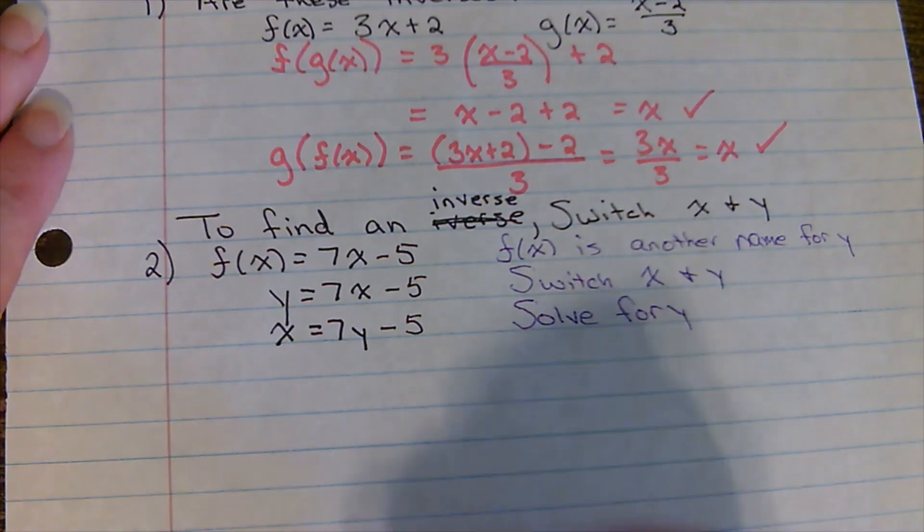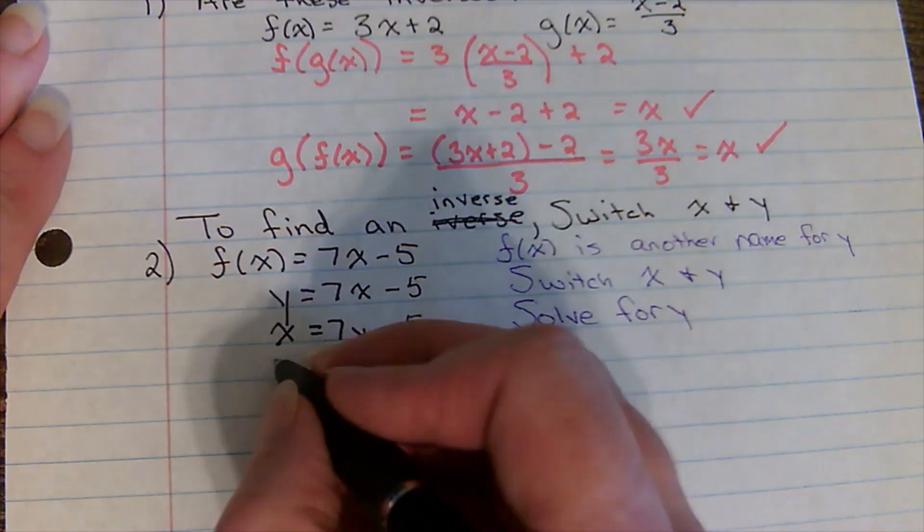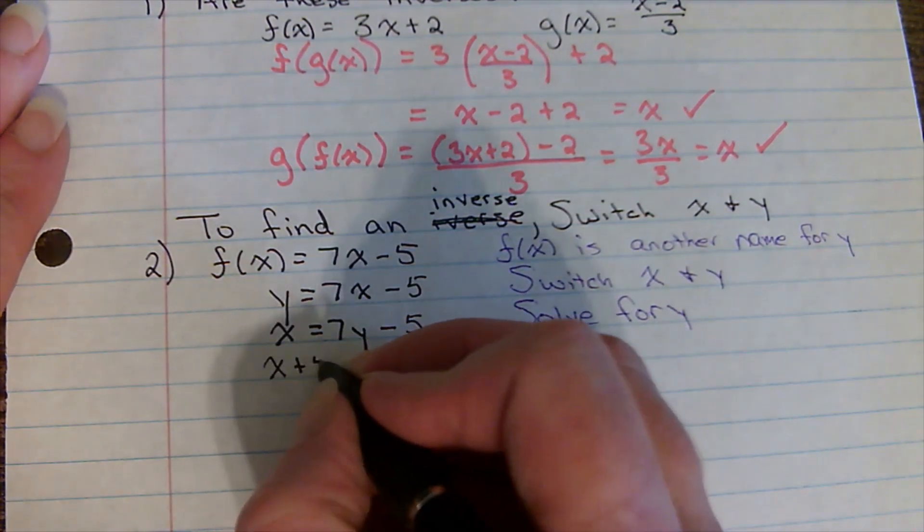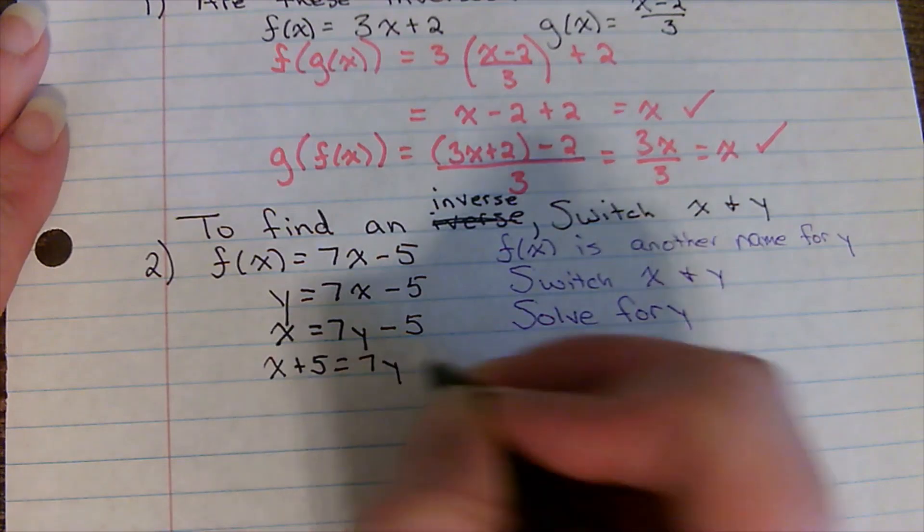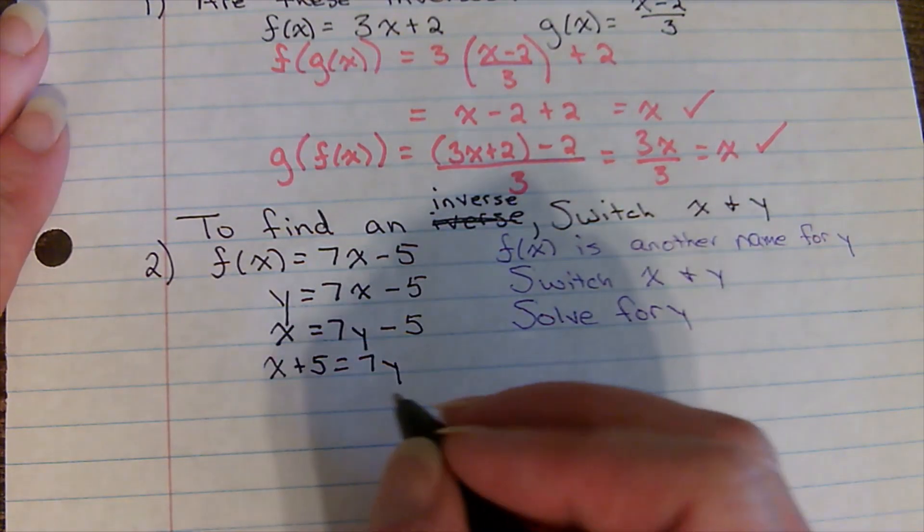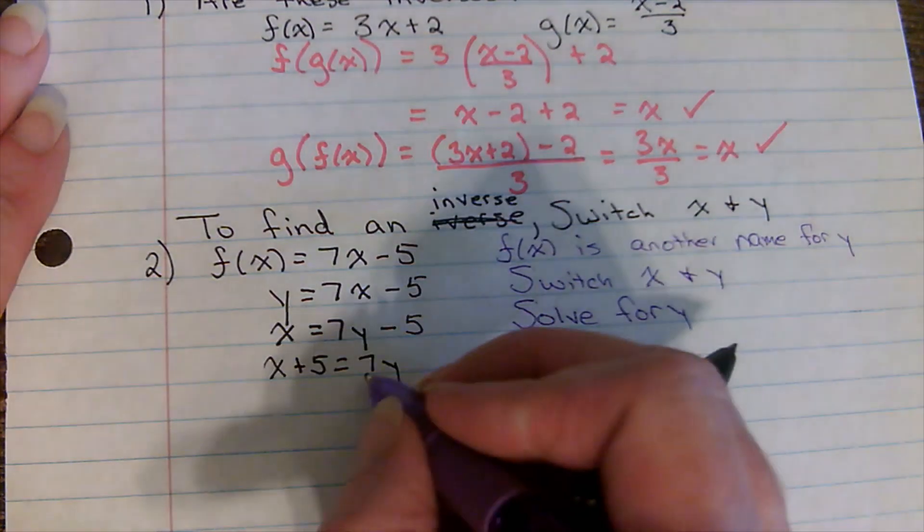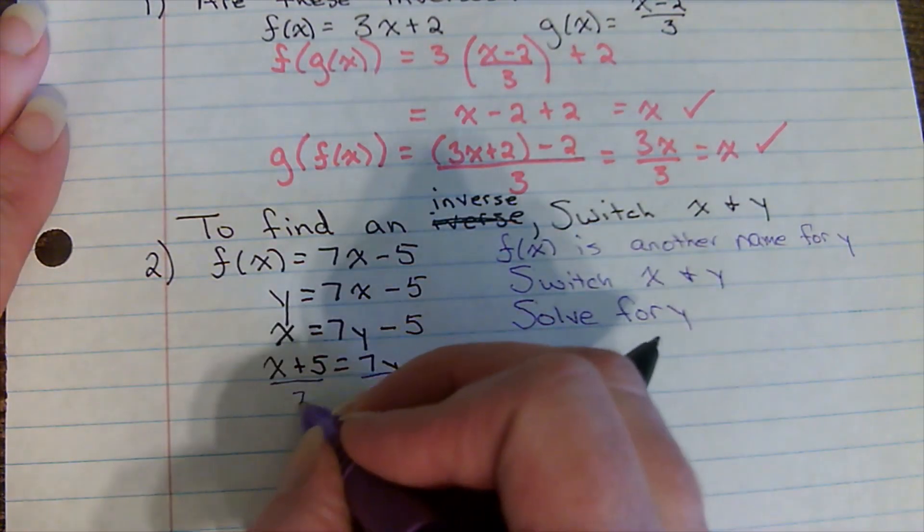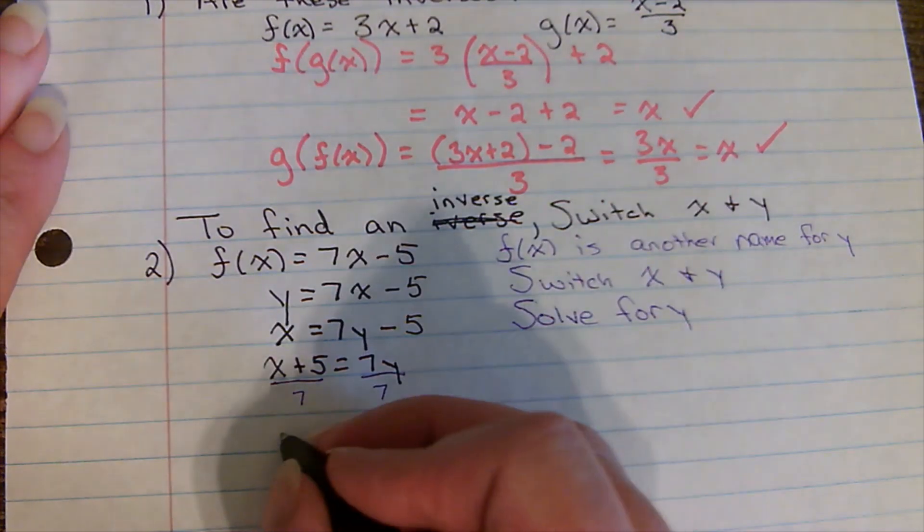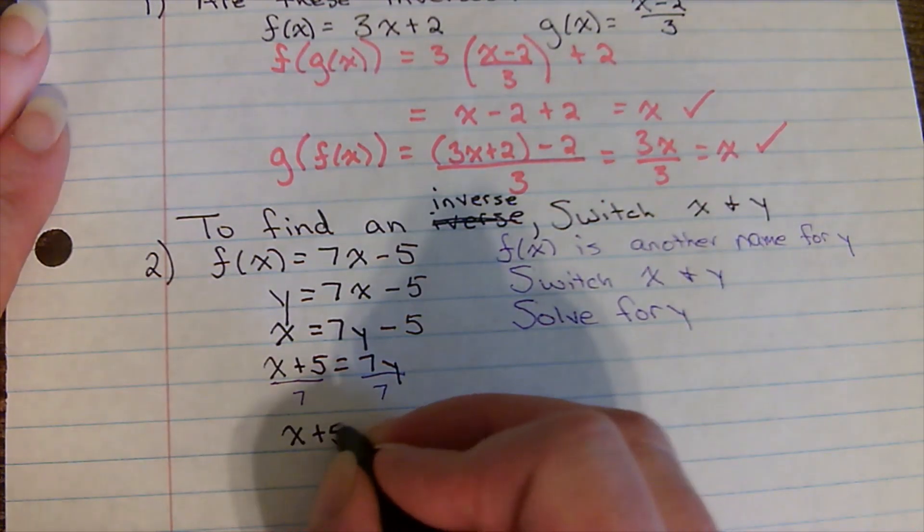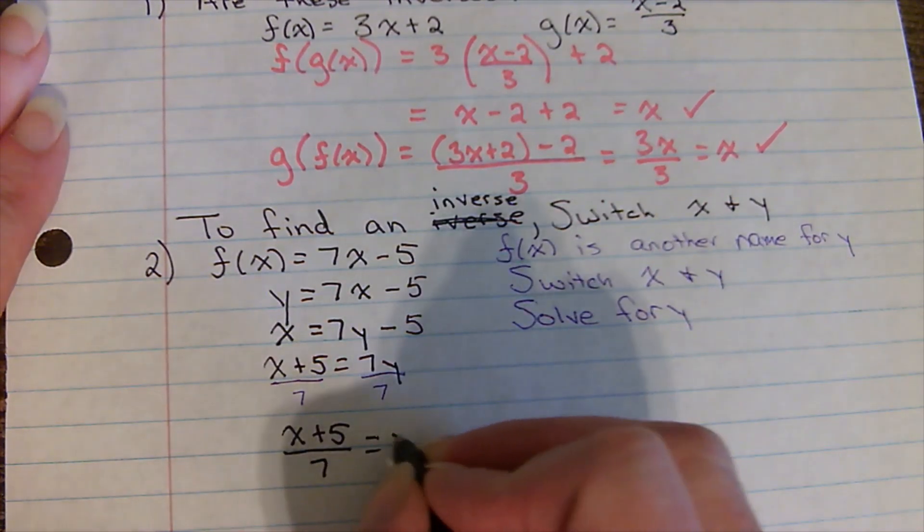To solve for y, I would add the five over, so x plus five equals seven y, and then divide both sides by seven. So divide both sides by seven. I get x plus five over seven equals y.